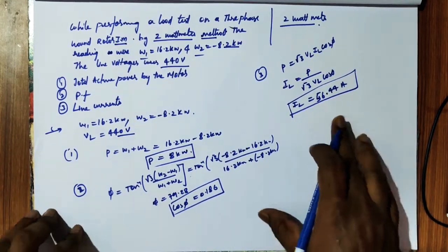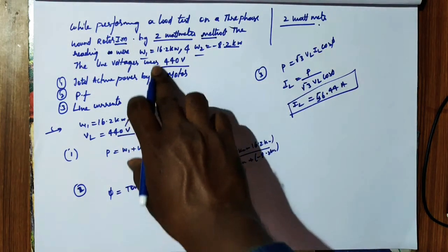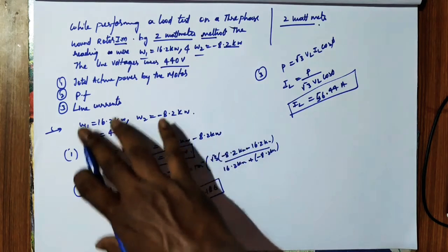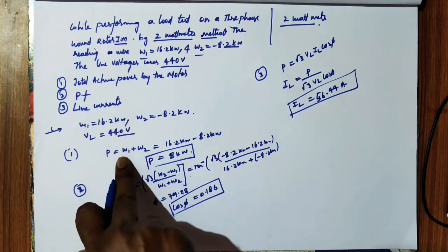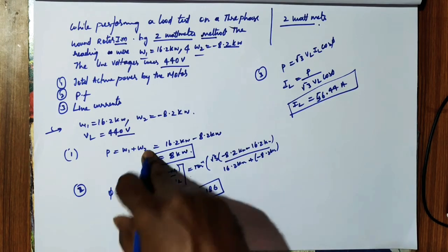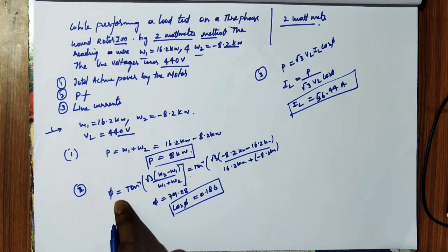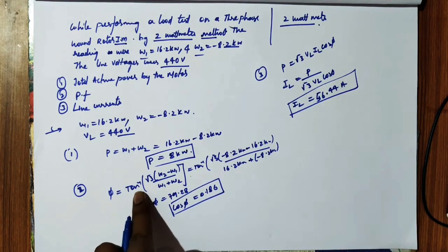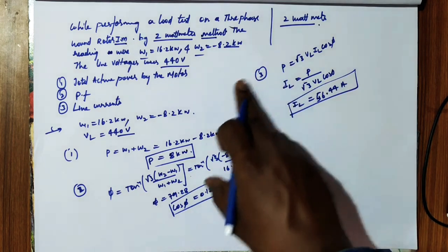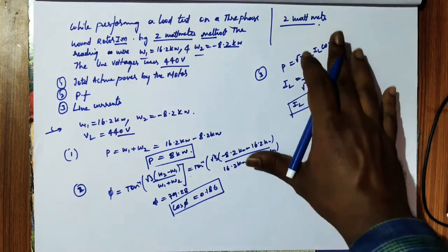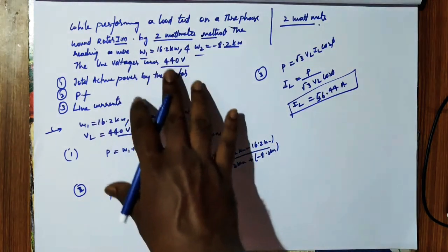The main thing to note in the 2 watt meter method: W1 and W2 are always given. For active power, use W1 + W2. For reactive power, use W2 - W1. For power factor, use phi = tan⁻¹ of root 3 times (W2 - W1) divided by (W1 + W2). Then use the active power formula to find line current.